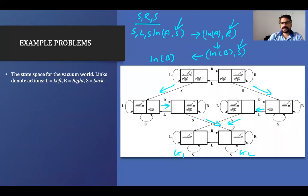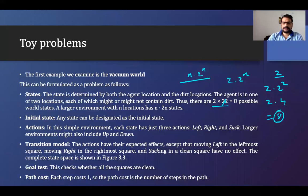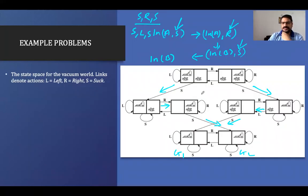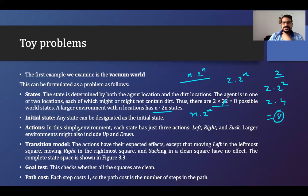We have eight states total: states one through eight. The formula is n × 2^n where n is the number of locations available for the agent. For initial state, any state can be designated as the initial state. For actions, in this simple environment each state has three actions: go left, go right, or do suction. A larger environment might also include up and down, but here we only have left, right, and suction.